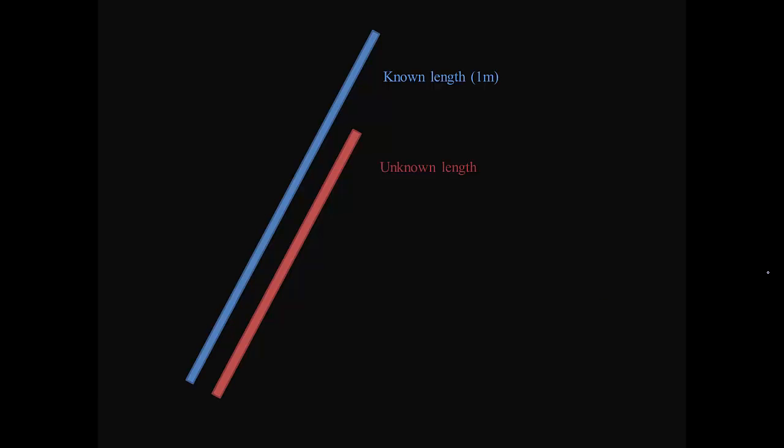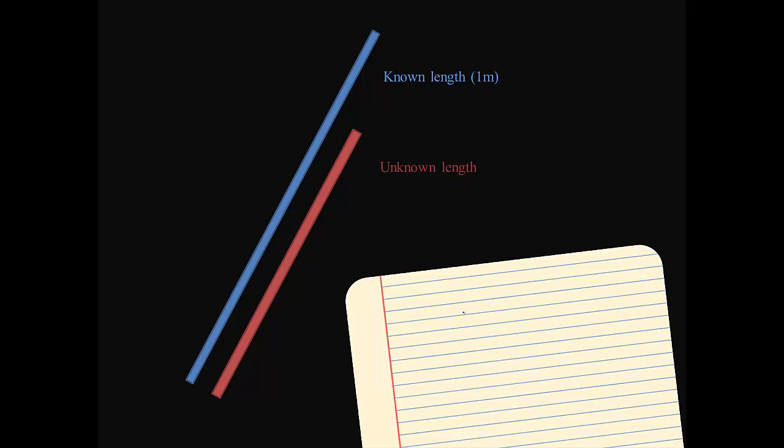The trick that we use here is actually very simple. Here's the idea. If I have two lines, one with a known length and the other with an unknown length, by simply comparing the lines and their lengths, it is possible to calculate the unknown length. In this instance, for example, we merely have to make the observation that the length of the red line is 3 quarters, or about 75% of the length of the blue line.